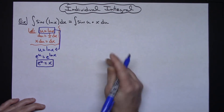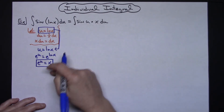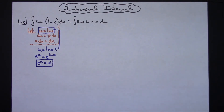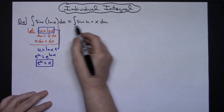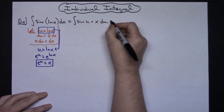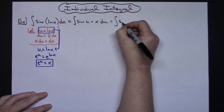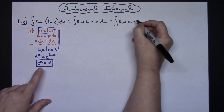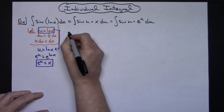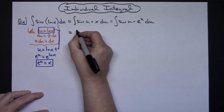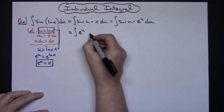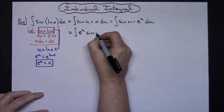I didn't pick anything different than what I'd already had — I just took what u was and manipulated it to get a value for x. So then I'm going to rewrite and we'll have the integral of sin(u) times e to the u, then du. We can clean that up and write it as the integral of e to the u sin(u) du.